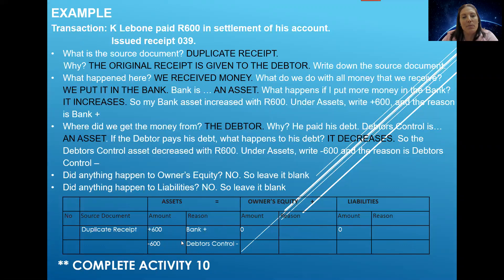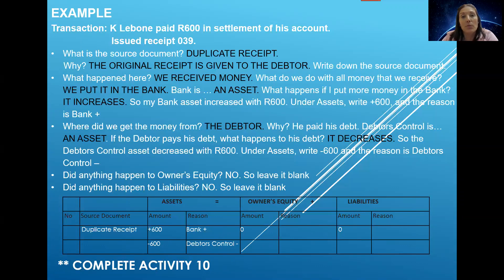We stay under assets because both accounts we are working with are asset accounts. So under assets, we write minus 600, and the reason is debtor's control. Did anything happen to owner's equity? Did we work with an owner's equity account? No. So nothing happened there. Did we work with a liability account? No. So nothing happened there — we leave it blank or write a zero.